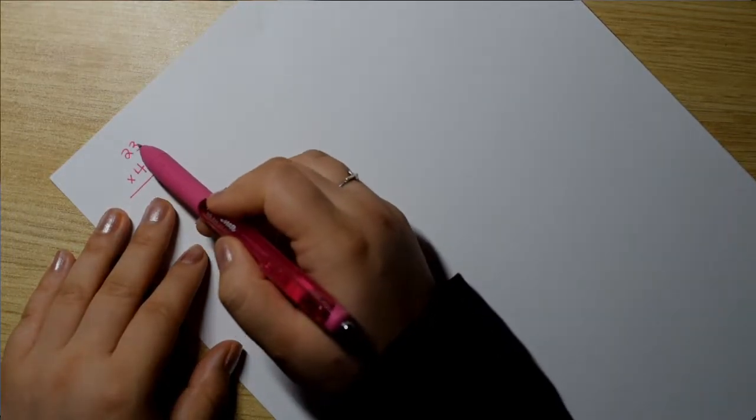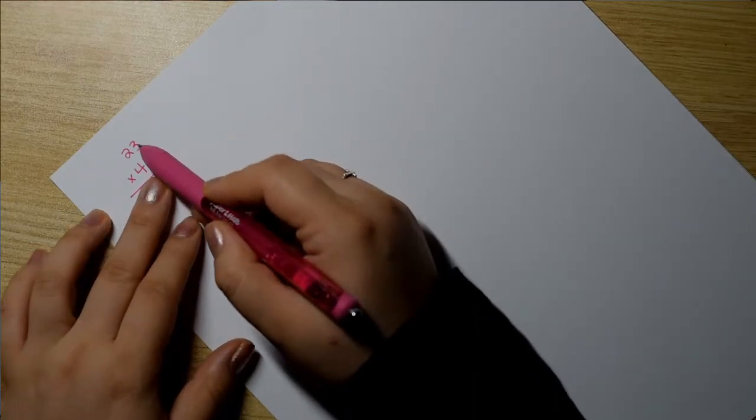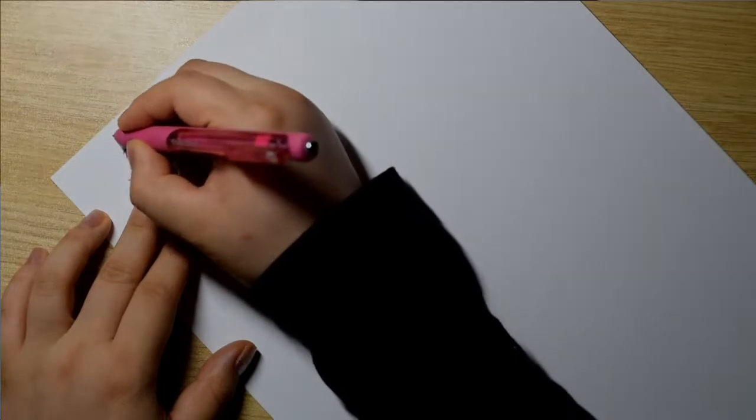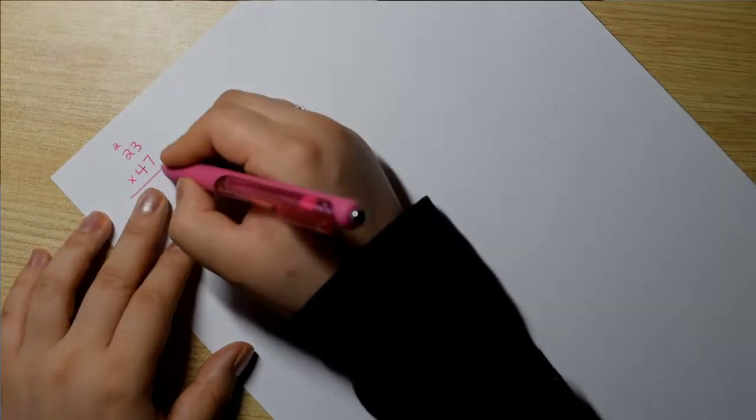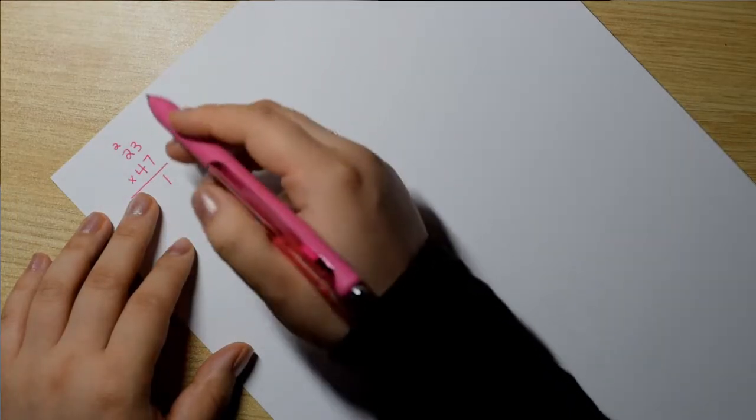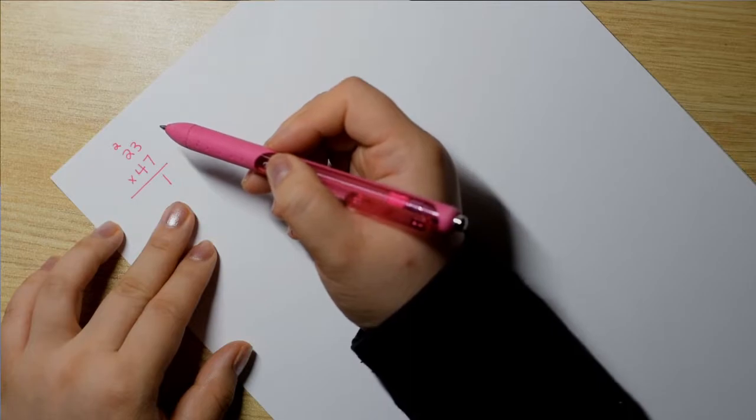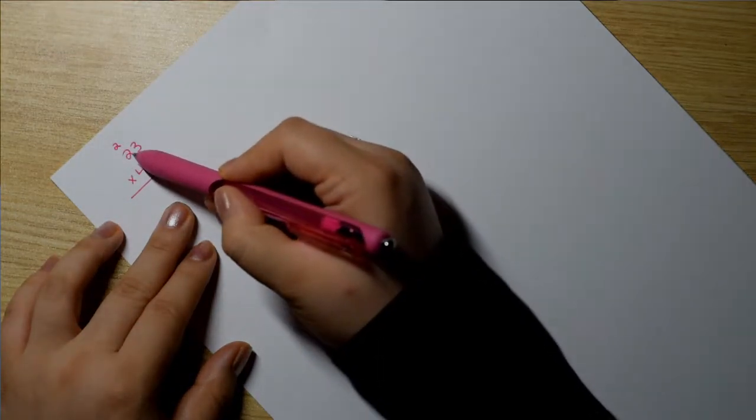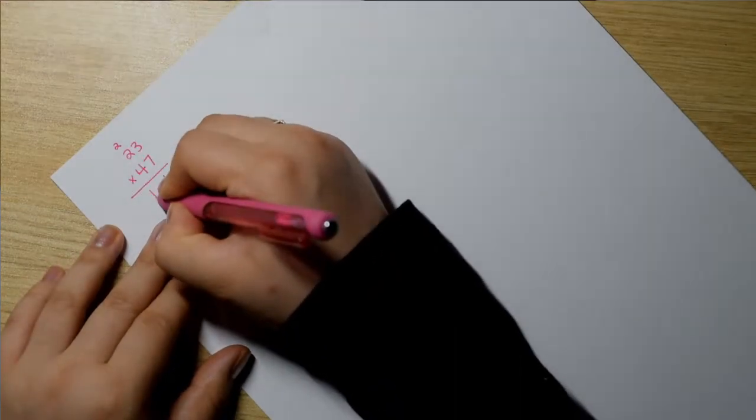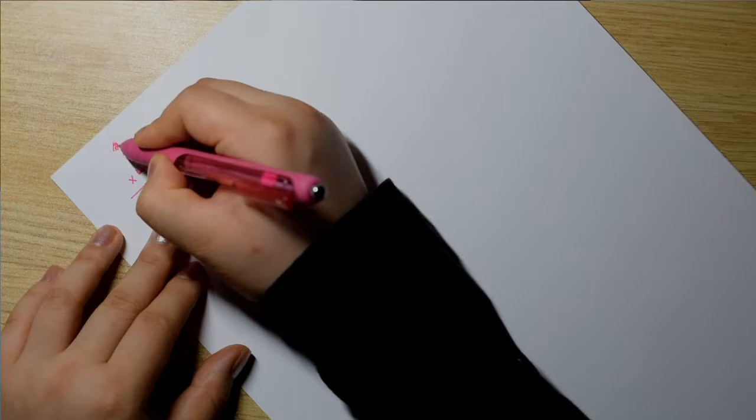So, 23 times 47. I start with the 7 and do 7 times 3, which is 21. So I'll put a little 2 there, put the 1 down. Then 7 times 2 is 14. Very nice. And then I'm going to add that 2. So 14 plus 2 is 16. So I'm going to lay that down and that 2 is all done.